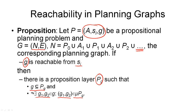So not only are all the goal propositions present in this layer, but they can also be achieved together — at least as far as we know. One caveat is that this only works in one direction, meaning we still only have a necessary condition for when a planning graph may contain a solution. But we can exploit that, and we will look at how to do that next.